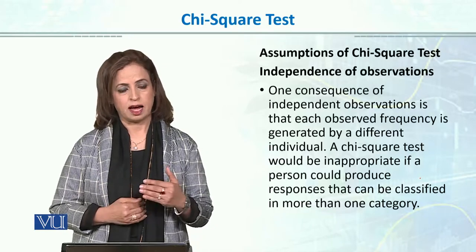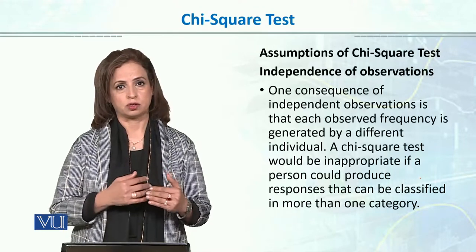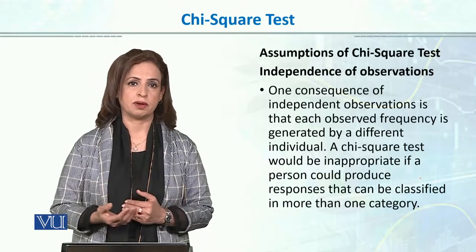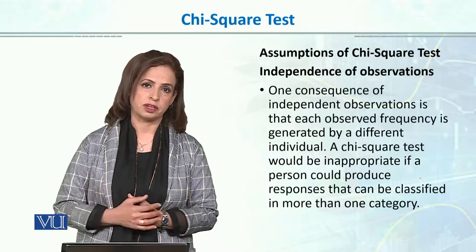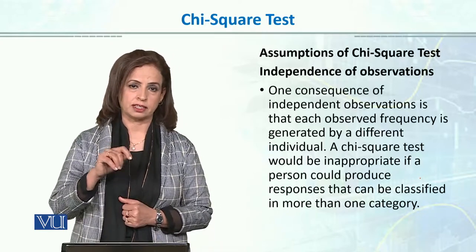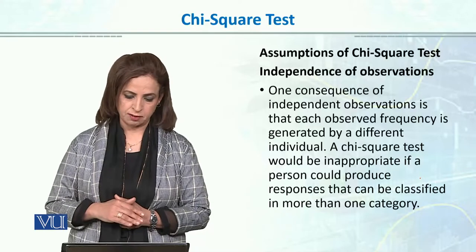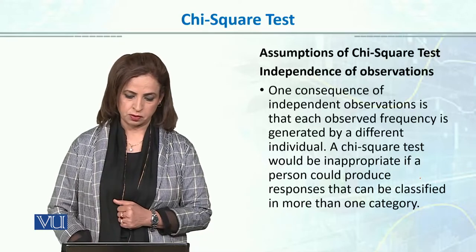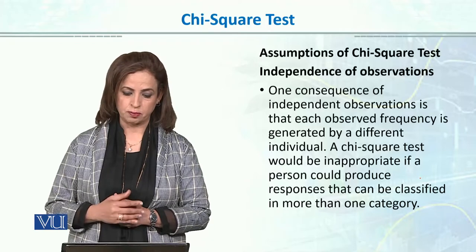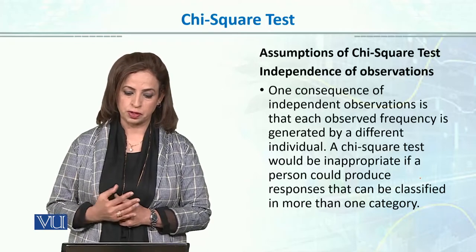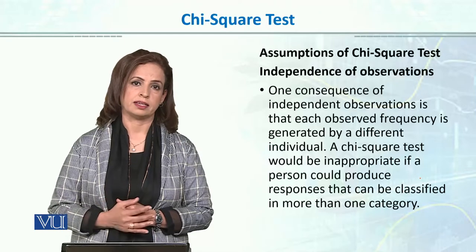For example, if you have categories of low, medium, and high, then scores must fall in only one category. Independence of observation means that our observations in each category and each cell are independent. A chi-square test would be inappropriate if a person could produce responses that can be classified in more than one category.